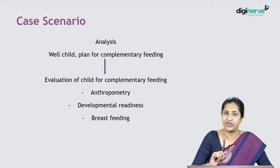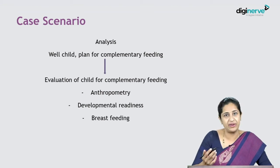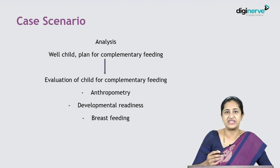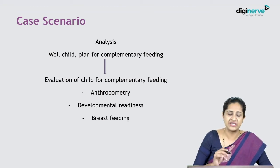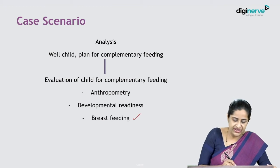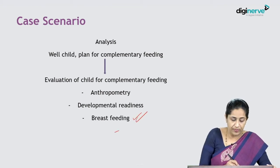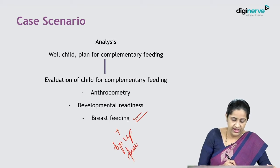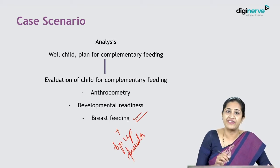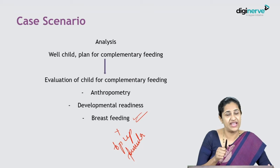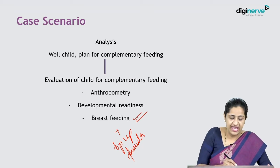To evaluate this child for complementary feeding, you are going to assess the anthropometry of the child, the developmental readiness, and whether breastfeeding is present or not. As per the history, breastfeeding was present and there was also top-up formula feeding. Developmental readiness — let us see that in the rest of the class.